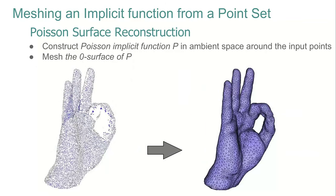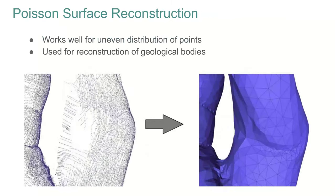Let's have a look at another type of implicit function. Here we have a 3D point set representing a scanned 3D object, and we would like to extract a triangle mesh from it. This can be achieved by computing a Poisson implicit function that approximates the point set, which can then be meshed using the mesh generation algorithm just described. Even if there are some missing points in the surface, the implicit function allows us to close it.